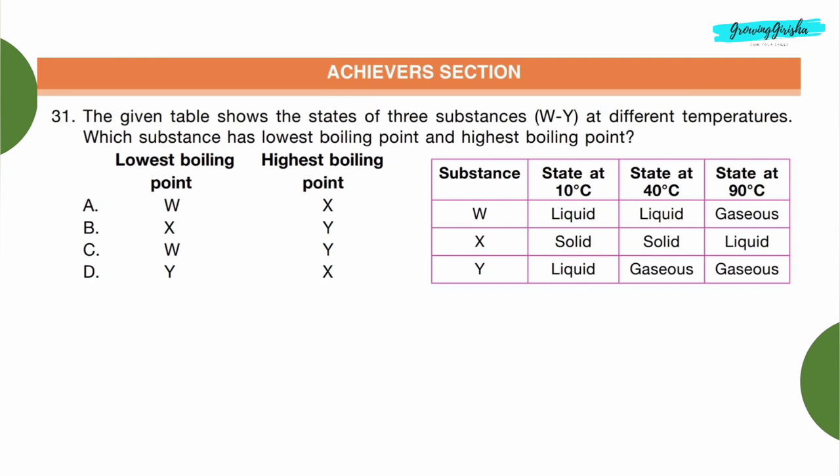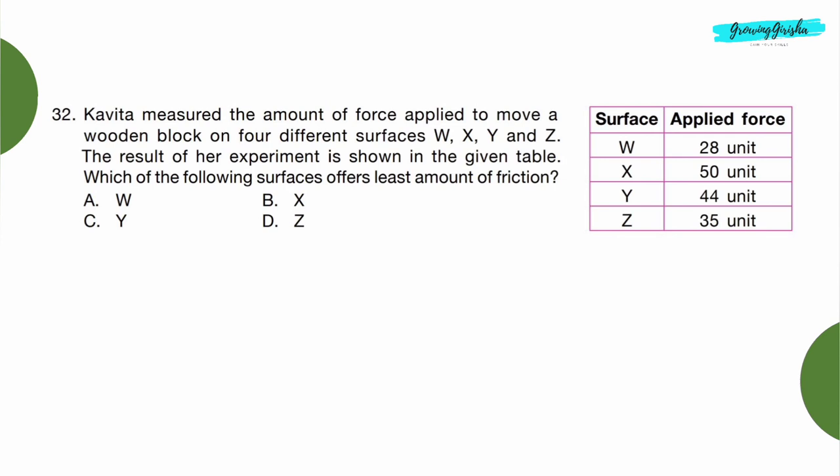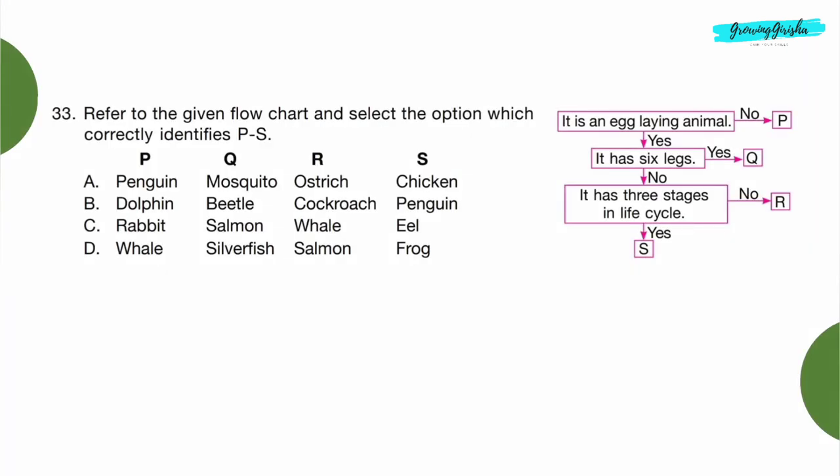Achievers Section. Question 31: The given table shows the states of three substances W, X, Y at different temperatures. Which substance has lowest boiling point and highest boiling point? Option D. Question 32: Kavita measured the amount of force applied to move a wooden block on four different surfaces W, X, Y, and Z. The result of her experiment is shown in the given table. Which of the following surfaces offers least amount of friction? Option A: W. Question 33: Refer to the given flow chart and select the option which correctly identifies P to S. Option D.